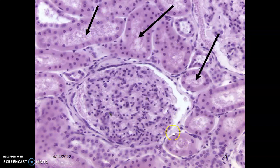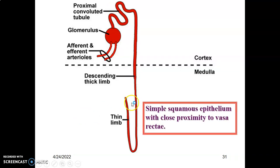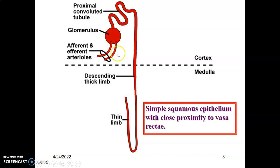Simple cuboidal means one layer of cells that are as tall as they are wide. The proximal tubule has convoluted and straight portions. The glomeruli parietal layer of the Bowman's capsule has simple squamous epithelium, while the capillary endothelium are also simple squamous. The distal convoluted tubule has simple cuboidal epithelium with no brush border.